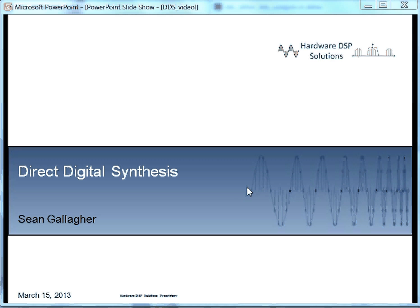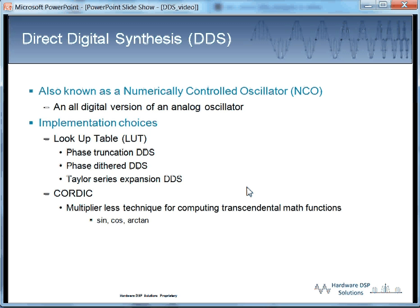In this module, we're going to talk about how to generate sinusoids from within the FPGA. We do that through a technique called direct digital synthesis, which is also known as a numerically controlled oscillator, and you can think of it as an all-digital version of an analog oscillator.